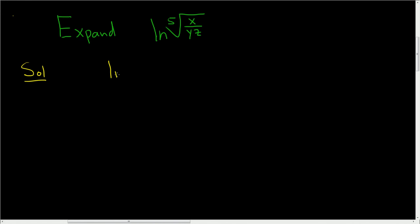So let's rewrite what we have as the natural log of x over yz, all being raised to the one-fifth power. The reason we can do that is because if you have, like say, the fifth root of a, there's really a one here, and this is just a to the one over five.